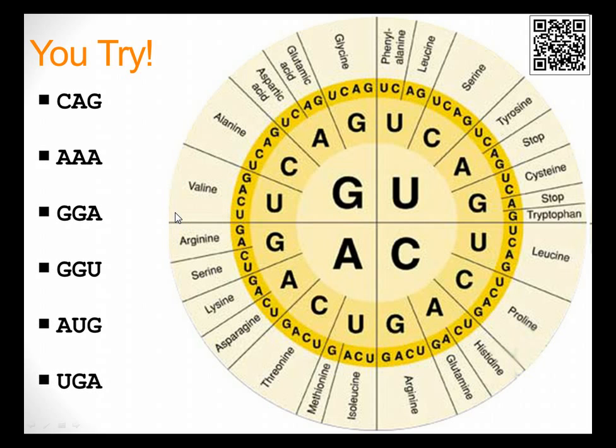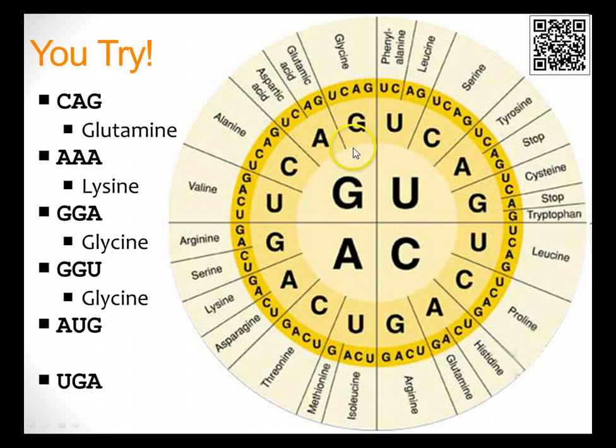So here are a few codons I'm going to give you, and I want you guys to pause the video right now and try some of these out on your own. Okay, hopefully now you've unpaused. So let's do this first one, CAG. So I just go C, A to G, that gives me glutamine. Next one, AAA. So I start with, remember, start with the middle. A to A to A gives me glycine. Next one, GGA, G to G to A, glycine. Next one, GGU, G to G to U, also glycine. I want you to notice that you can get to this amino acid multiple ways. In this case right here, there's four right here.